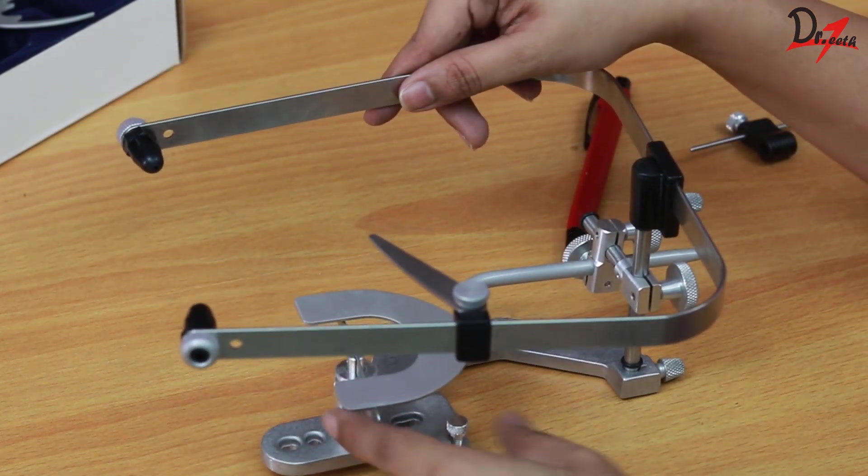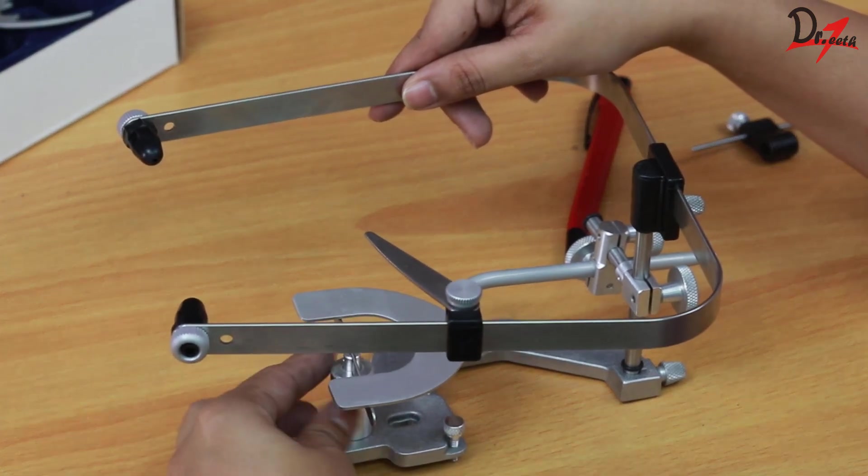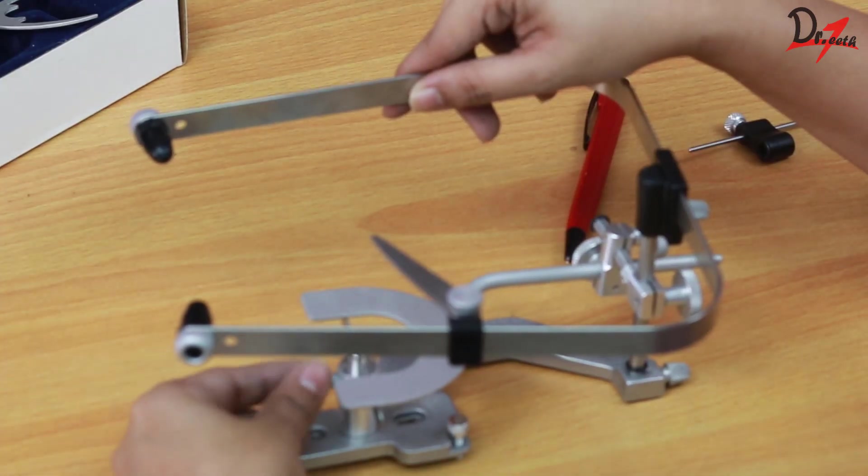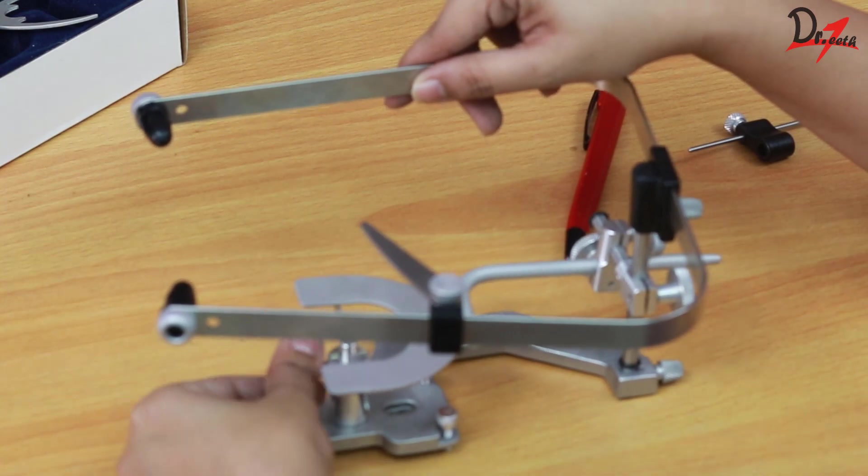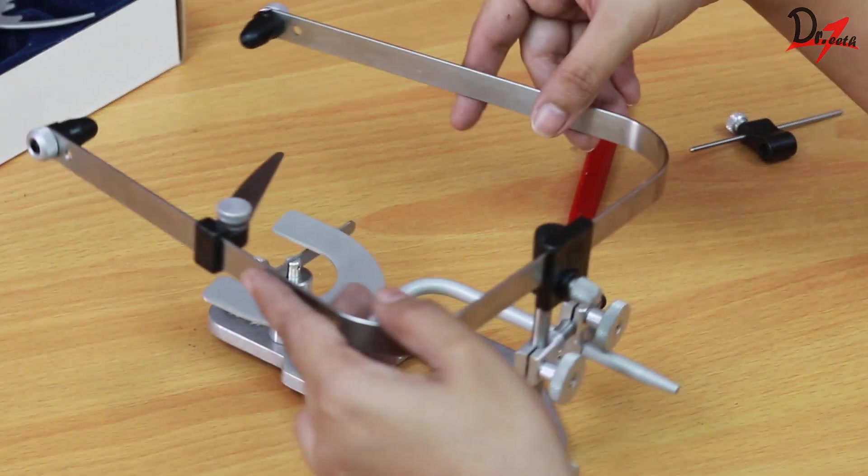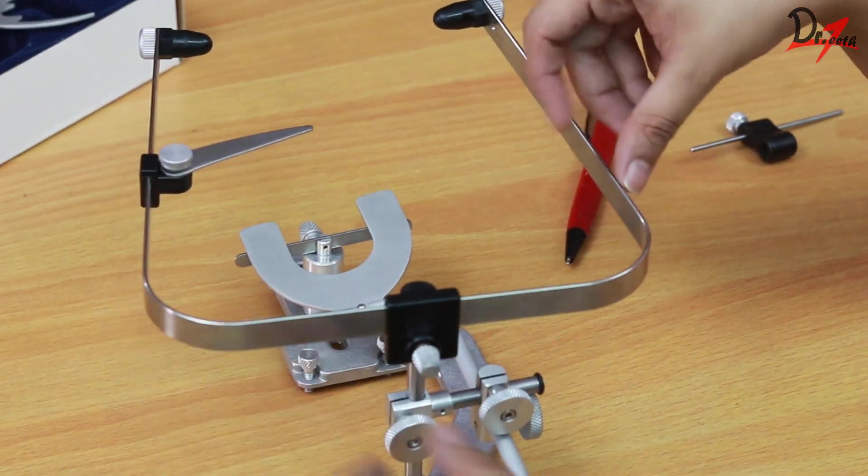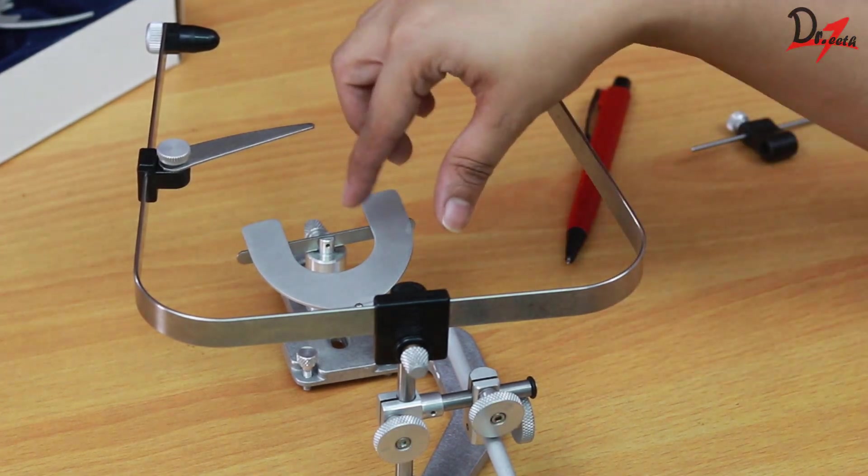This is how it will look. On the top, we will have the maxillary cast and we can mount the upper cast. And then after we're done mounting and the material is set, we can remove this assembly.